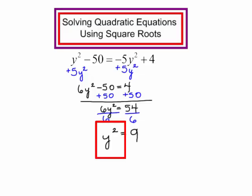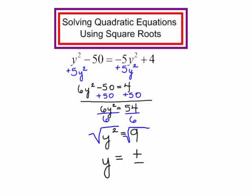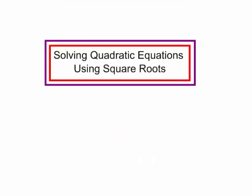Now the squared term is by itself. I will take the square root of both sides — the square root of y squared is y, and since I took the square root of both sides, I will put plus or minus. The square root of 9 is 3. Watch the other videos on using square roots to solve quadratic equations.